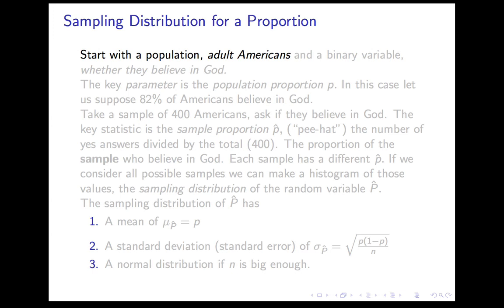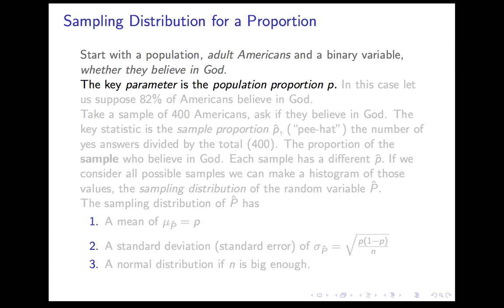Now we're going to put these all together into one big and lovely package. Let's start with a population — adult Americans — and a binary categorical variable: whether they believe in God. There's really only one parameter of any interest: the population proportion, which we'll call P. This violates our convention that parameters should be referred to by Greek letters, but almost everyone uses P for proportion.